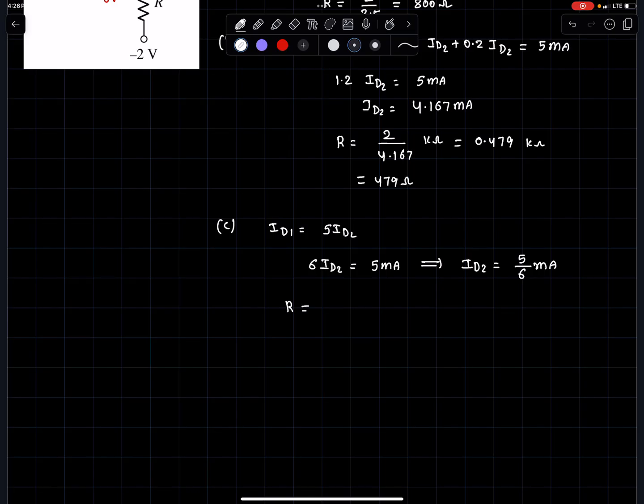As usual, R equals 2 over id2. So it's 12 over 5, which equals 2.4 kilo-ohms.